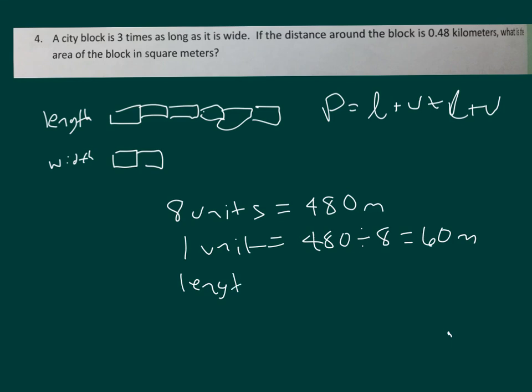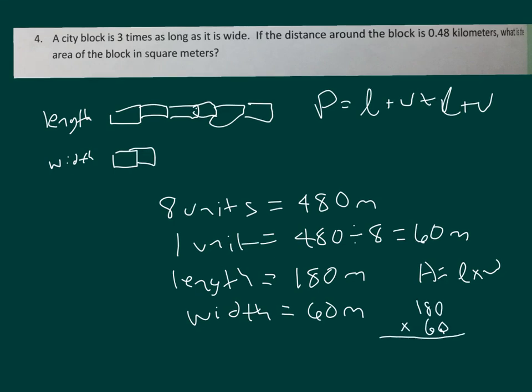That means that our length, which is 3 times the width, is 180 meters. And our width is 60 meters. Area, that's what we're trying to figure out, is equal to length times width. So take 180 and multiply by 60. And when we multiply those two together, we will get our answer. Compare your work with the screen. The area of the block is 10,800 square meters.